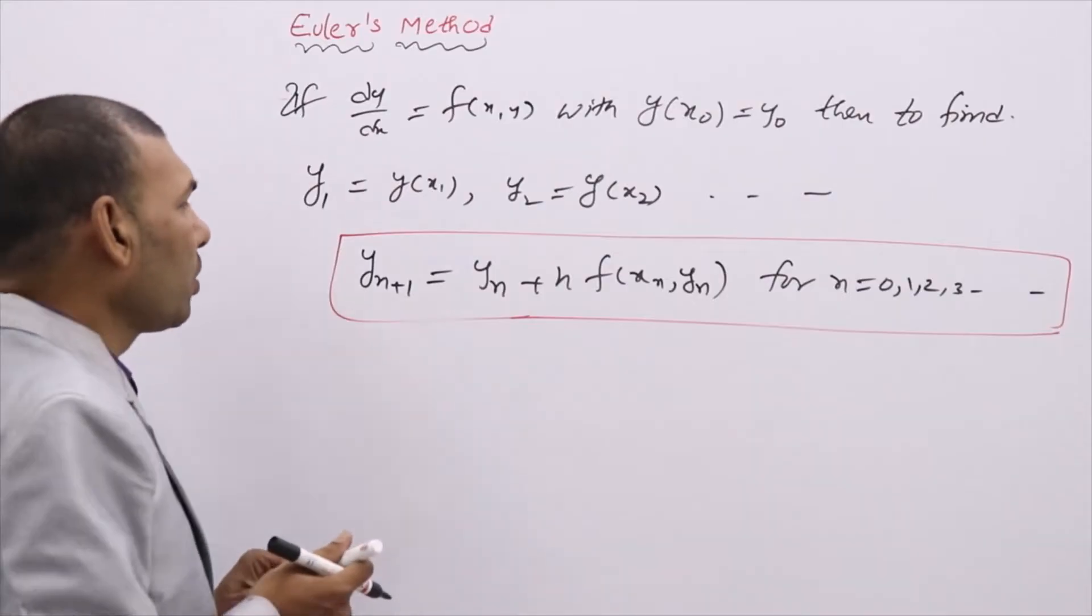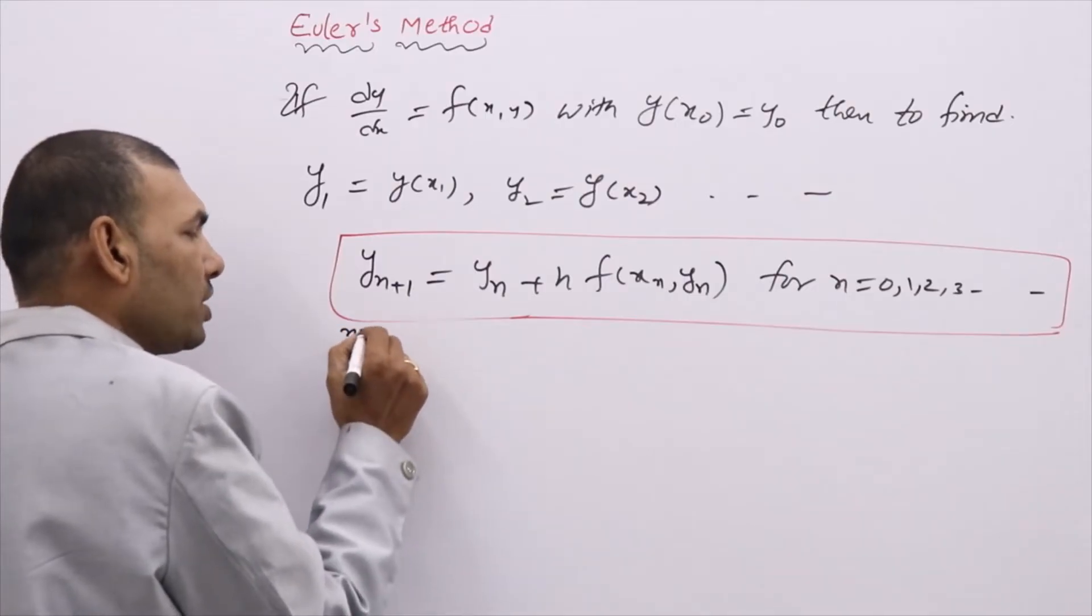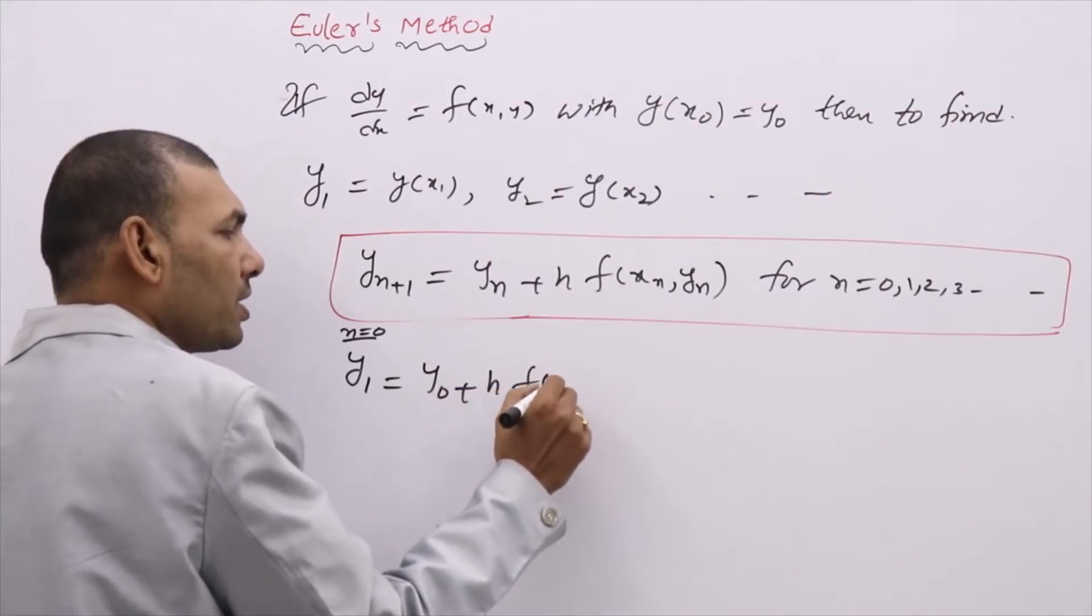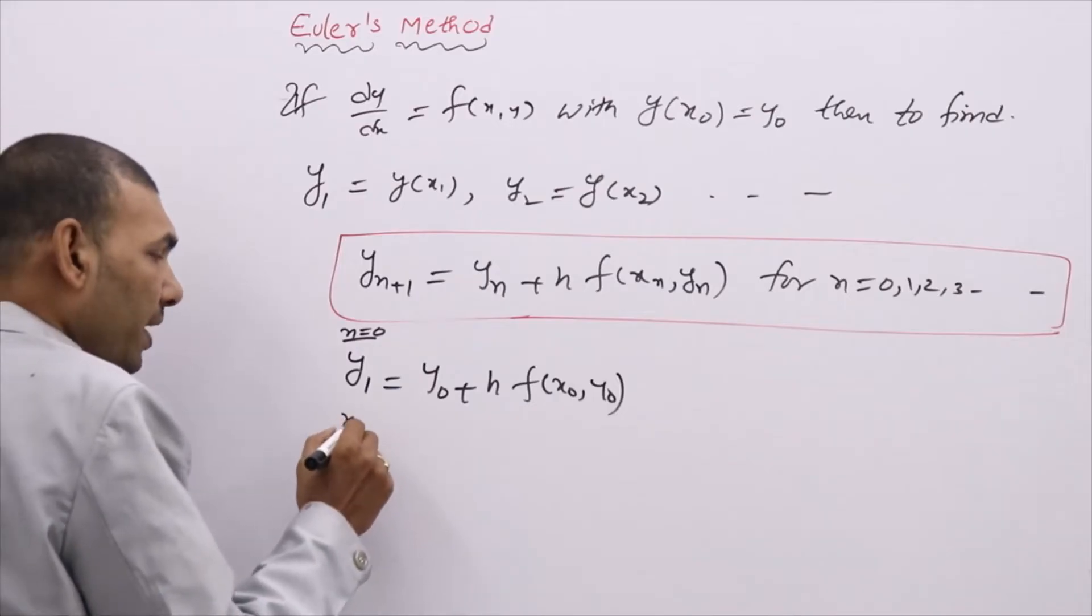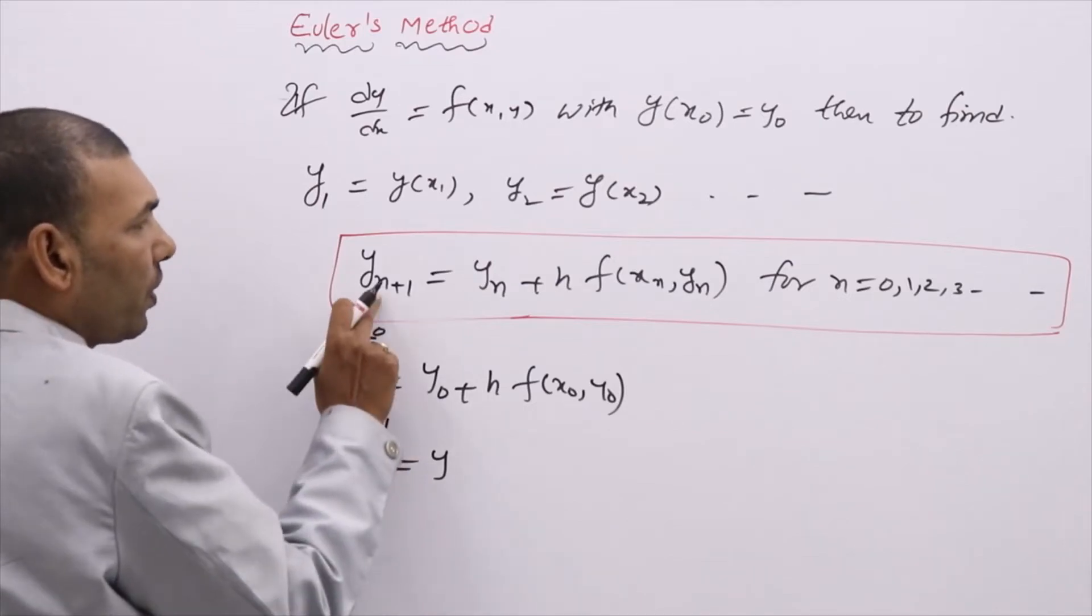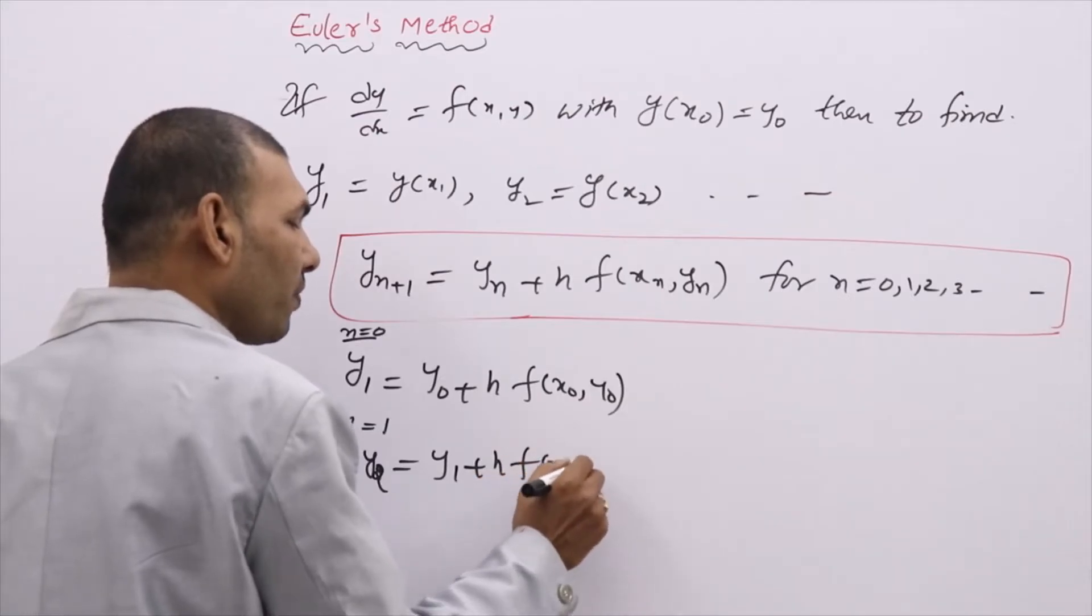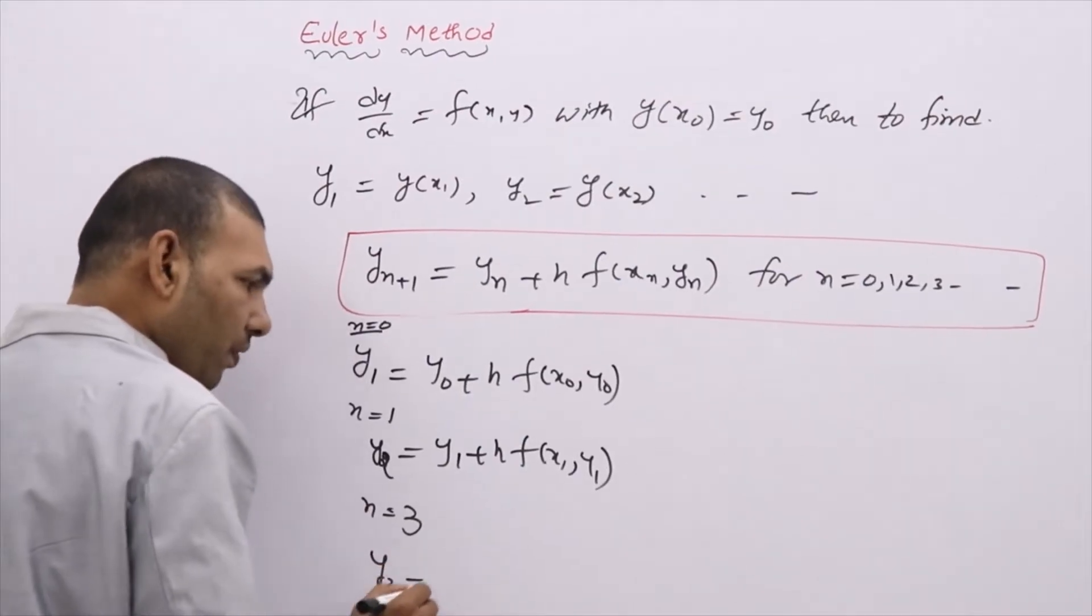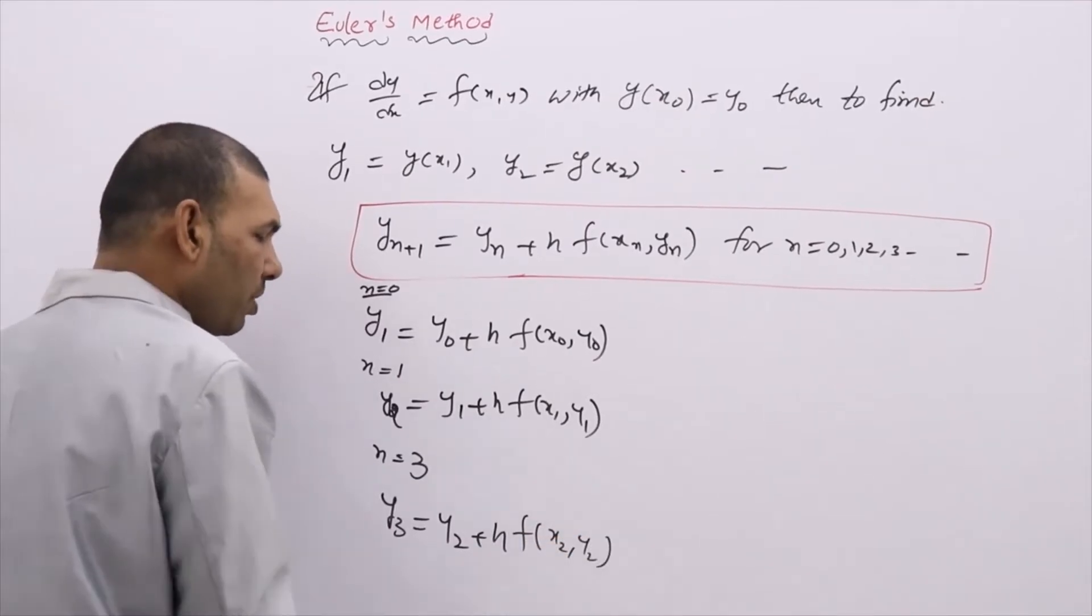If you write n=0, you will get y₁. If you write n=1, y₂ = y₁ + h·f(x₁, y₁). If you write n=3, y₃ = y₂ + h·f(x₂, y₂). Like this,